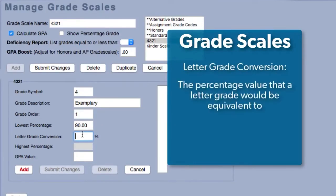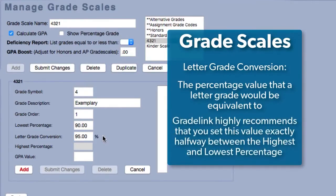Letter Grade Conversion refers to the percentage value that the grade would be equivalent to. This value is necessary for performing calculations in cases when assignments receive non-numerical grades. Gradelink highly recommends setting the letter grade conversion to a value halfway between the highest and lowest percentages.